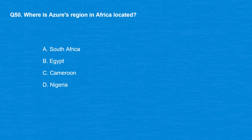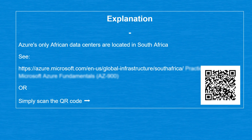Question 50: Where is Azure's region in Africa located? Option A: South Africa. Option B: Egypt. Option C: Cameroon. Option D: Nigeria. The correct answer is Option A, South Africa. Azure's only African data centers are located in South Africa.